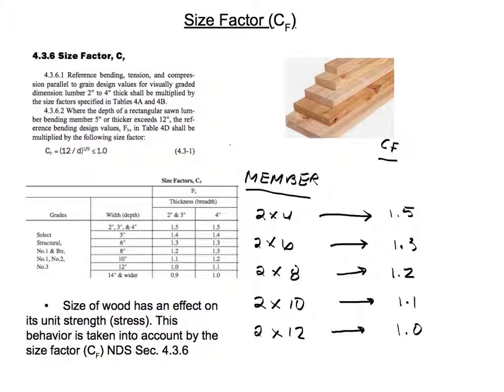If you look, we have a table—I believe this is Table 4a. We have here the grades, Select Structural all the way to Number 3. We have the depth of the wood member, so it goes from 2 inches all the way to 14 inches, and we have here the thickness of the wood member: 2 inches and 4 inches.